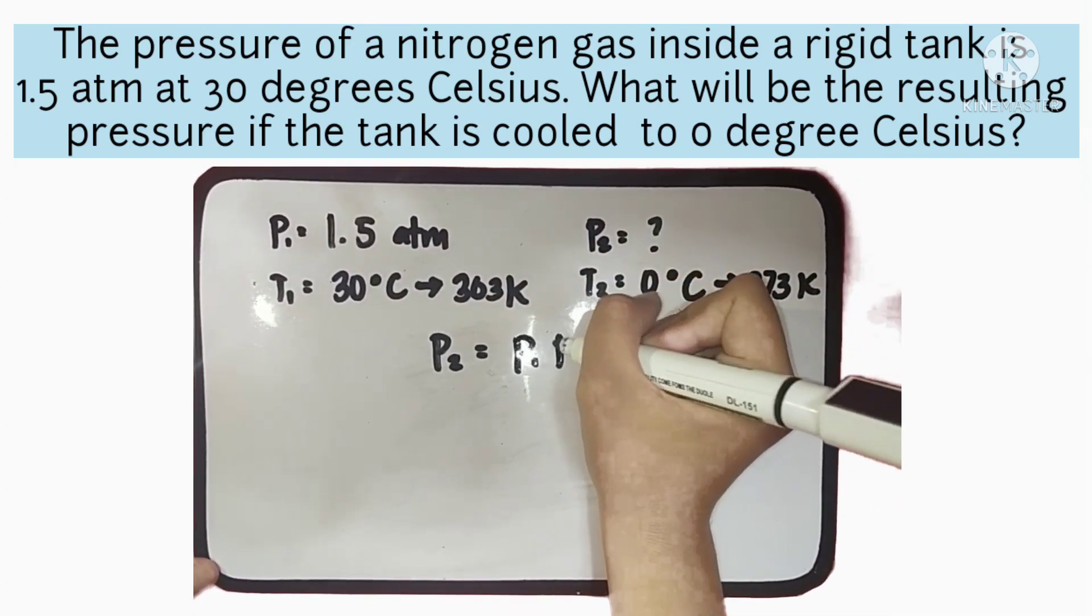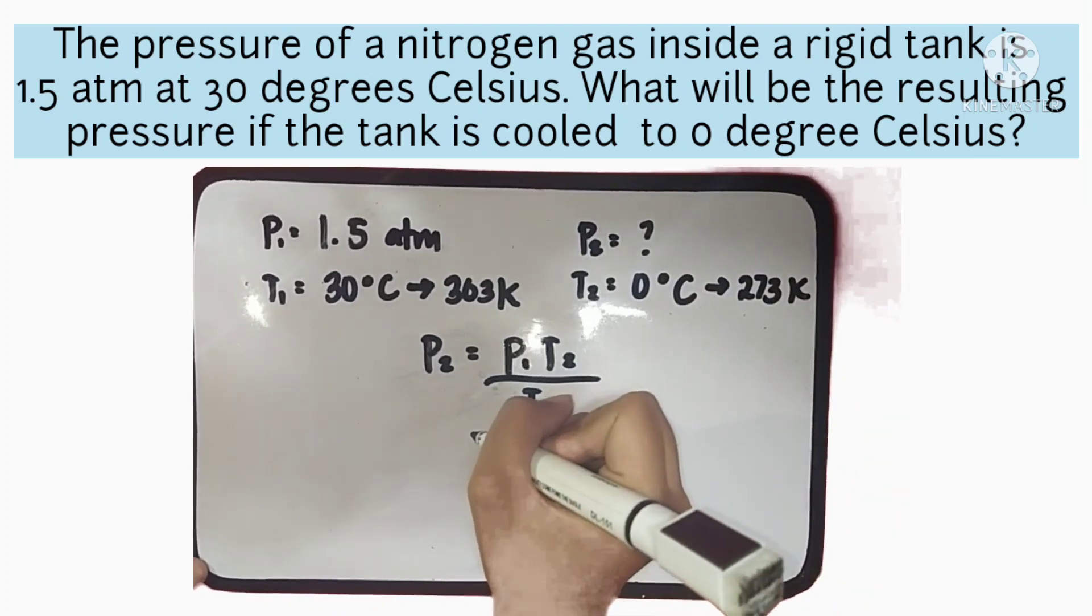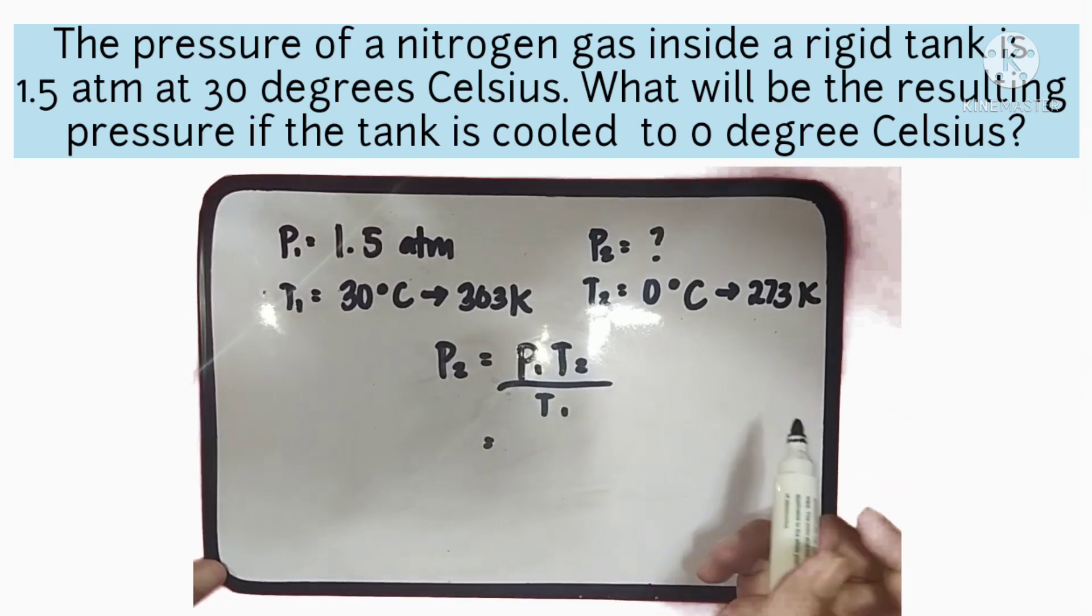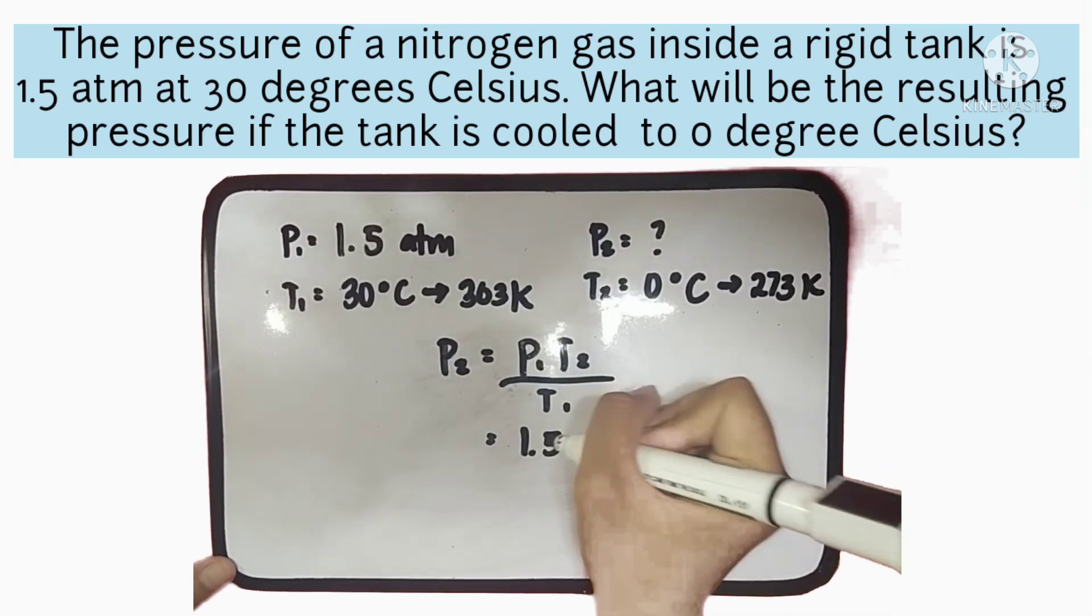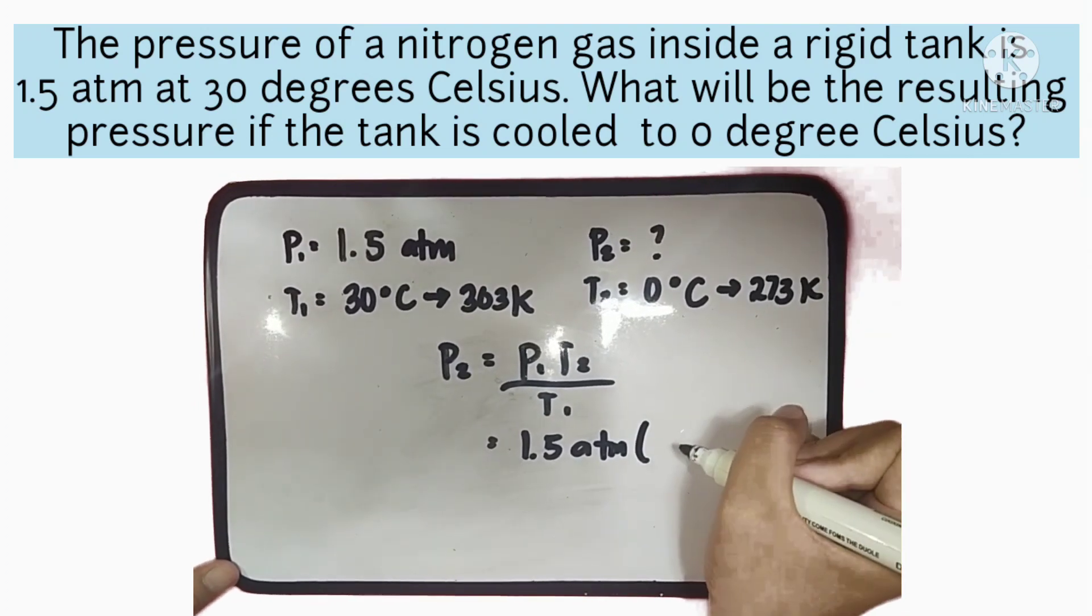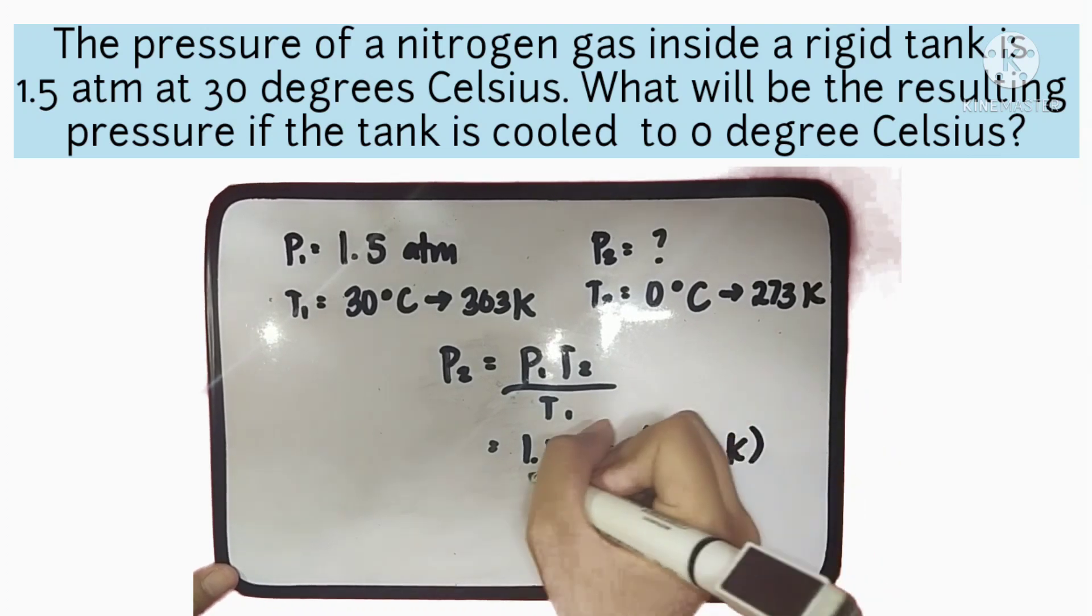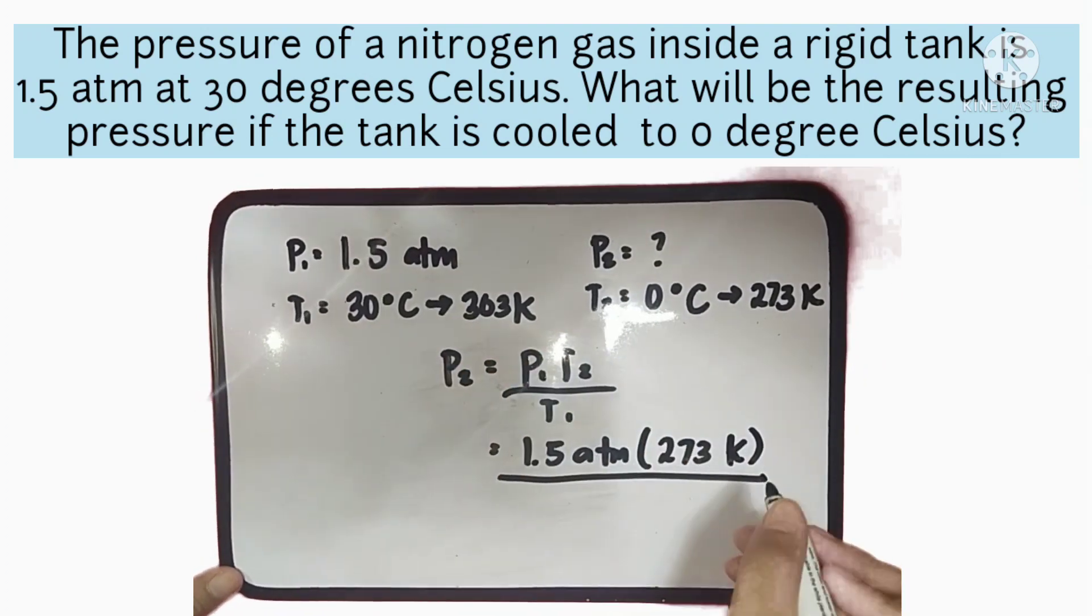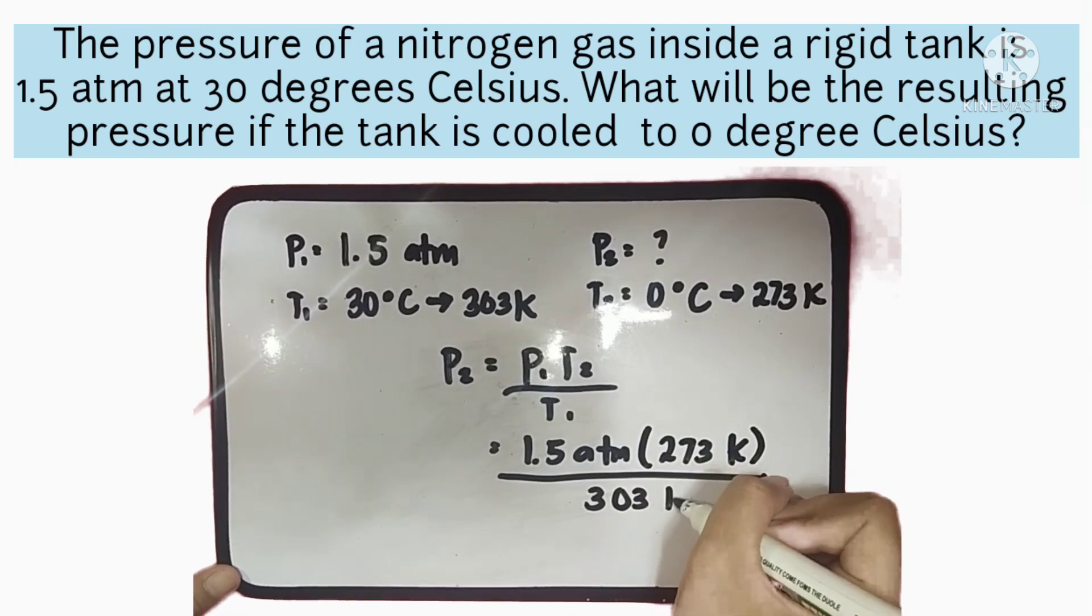We will simply substitute all the given from the problem, so your P1 is 1.5 atm, to be multiplied to the final temperature, which is 273 Kelvin, divided by the initial temperature, which is 303 Kelvin.